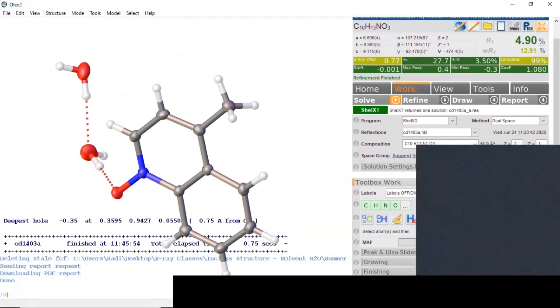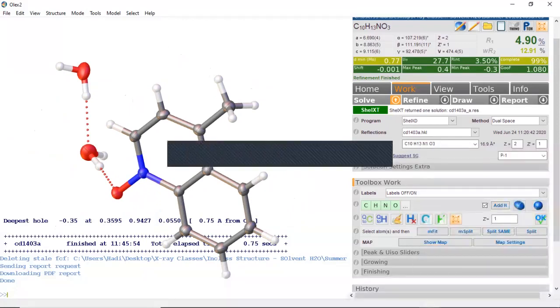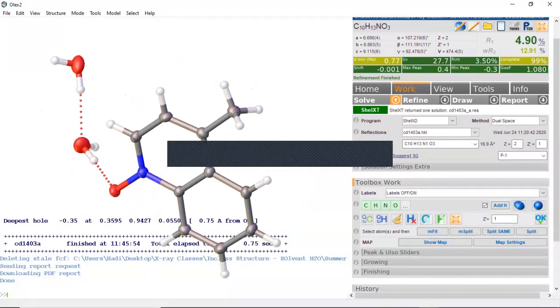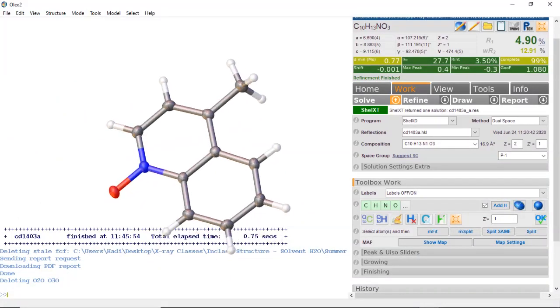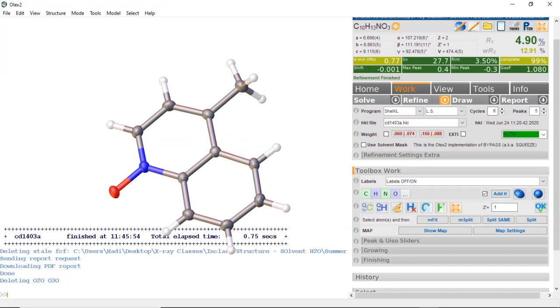The first thing we're going to do is we're going to remove the two water molecules from the crystal lattice and we're going to do a refine. Now the R is going to jump up because we've removed those electron density areas from the crystal lattice.